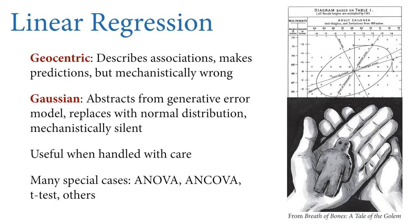The problem with geocentric models is not the model itself—geocentric models are extremely useful; we still build planetariums with them. What's wrong with the geocentric model is believing it's a generative structural model of the solar system. Likewise, there's nothing wrong with linear regression unless you believe it's an accurate mechanistic model. If you can keep the distinction between the causal model and the statistical model clear, these are extremely powerful golems. The second connection is that linear regression is inherently Gaussian—we'll use the Gaussian error model, which abstracts away from details of any specific generative error model.